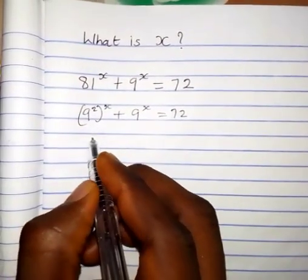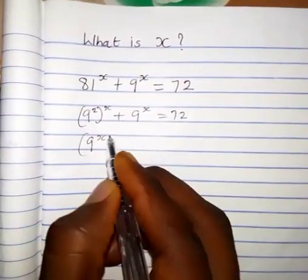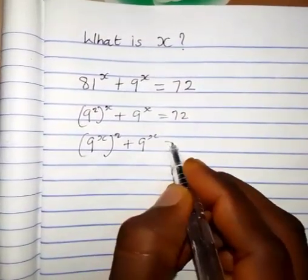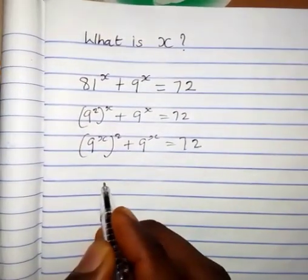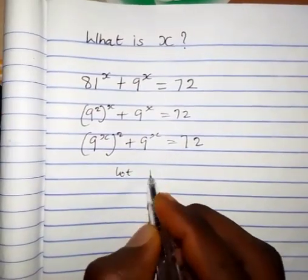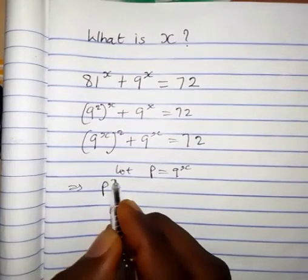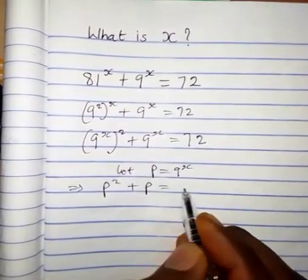This can be written as 9 to the power of 2x, which equals 9 to the x squared. Let p equal 9 raised to the power of x. This implies that p squared plus p equals 72.